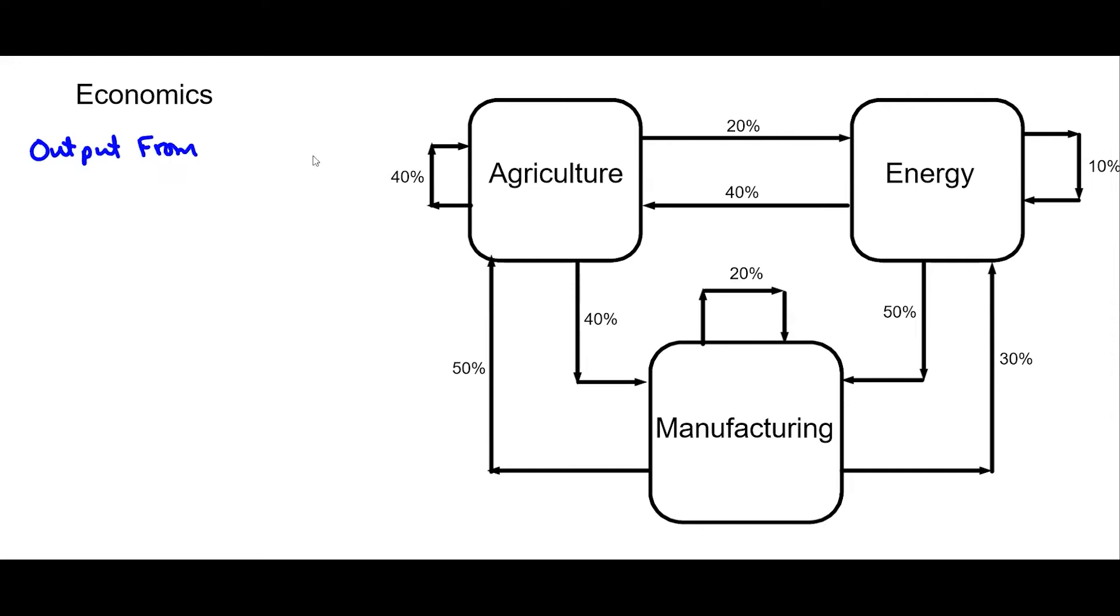Output from, and then we'll have a column that's output to. So we have agriculture, energy, manufacturing, and then we're going to output to again agriculture, energy, and manufacturing.